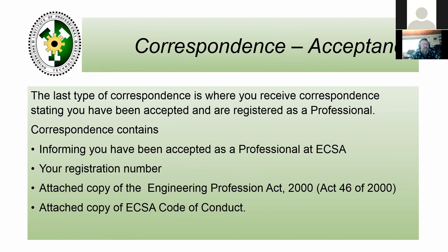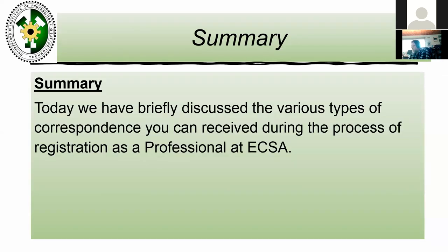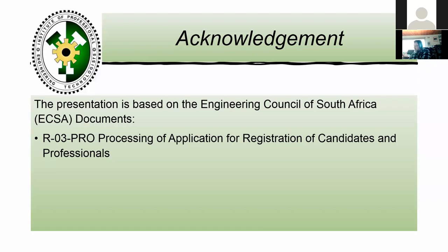The last type of correspondence is acceptance — you have been accepted and are registered as a professional. The correspondence informs you of your acceptance at ECSA, your grade, your registration number, and attaches a copy of the Engineering Professions Act and the ECSA code of conduct. Today we have briefly discussed the various types of correspondence you can receive during the process of registration as a professional at ECSA. This is based on ECSA document RO3 — processes of application for registration of candidates and professionals, which is on their website.